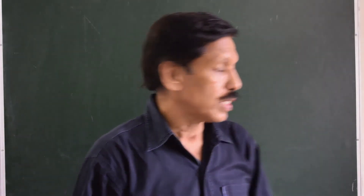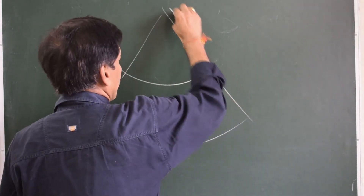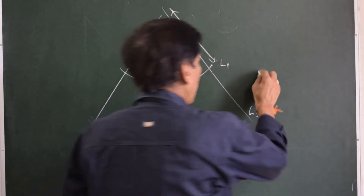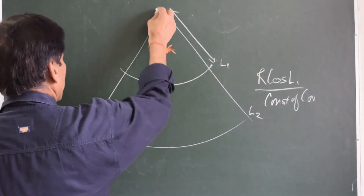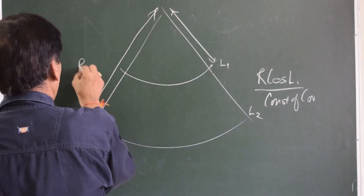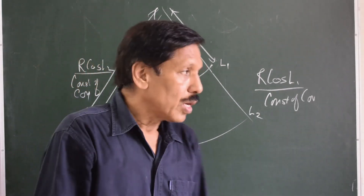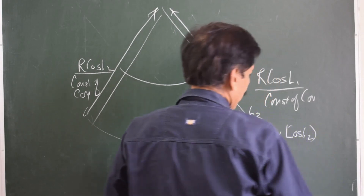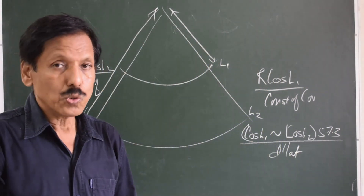Now let us understand the two standard parallel conical projection. In this projection, the parallels of latitude are shown as concentric circles. The distance of one standard parallel latitude L1 from the pole is given by R·cos(L1) divided by the constant of cone. Similarly, the distance of the other standard parallel L2 from the pole is R·cos(L2) divided by the constant of cone. The constant of cone is: [cos(L1) − cos(L2)] × 57.3 divided by DL. This is how you can draw a two standard parallel conical projection.